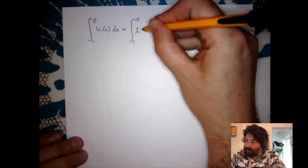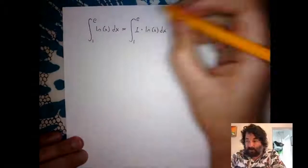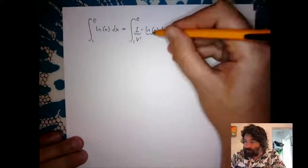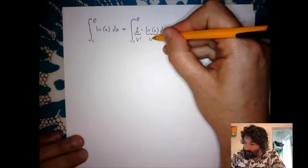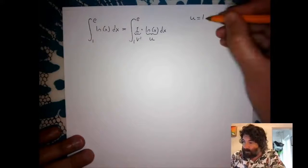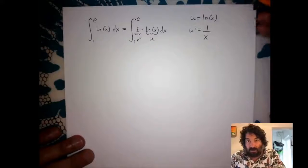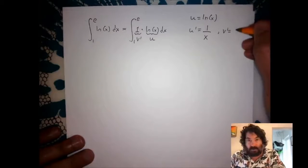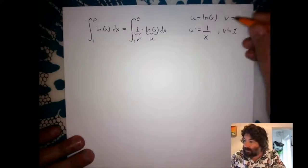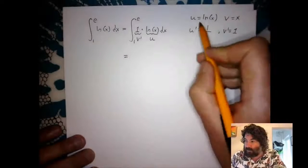This one isn't obviously written as a product of two functions, so it may be hard to see how to apply integration by parts at first. But you can write natural log x as 1 times natural log x, making it a product of the functions 1 and ln x. We write it as the integral from 1 to e of 1 times ln x dx. Here, 1 will be v′ and ln x will be u.